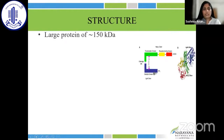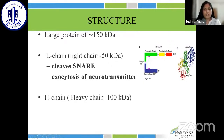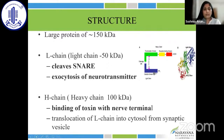Coming to the structure, it is a large protein of 150 kilodaltons having a light chain and a heavy chain. The light chain weighs 50 kilodaltons, has the catalytic domain, and cleaves the SNARE proteins, which are responsible for the exocytosis of the neurotransmitter across the synaptic membrane. The heavy chain weighs 100 kilodaltons and is responsible for binding of the toxin with the nerve terminal and for translocation of the light chain into the cytosol from the synaptic vesicle.